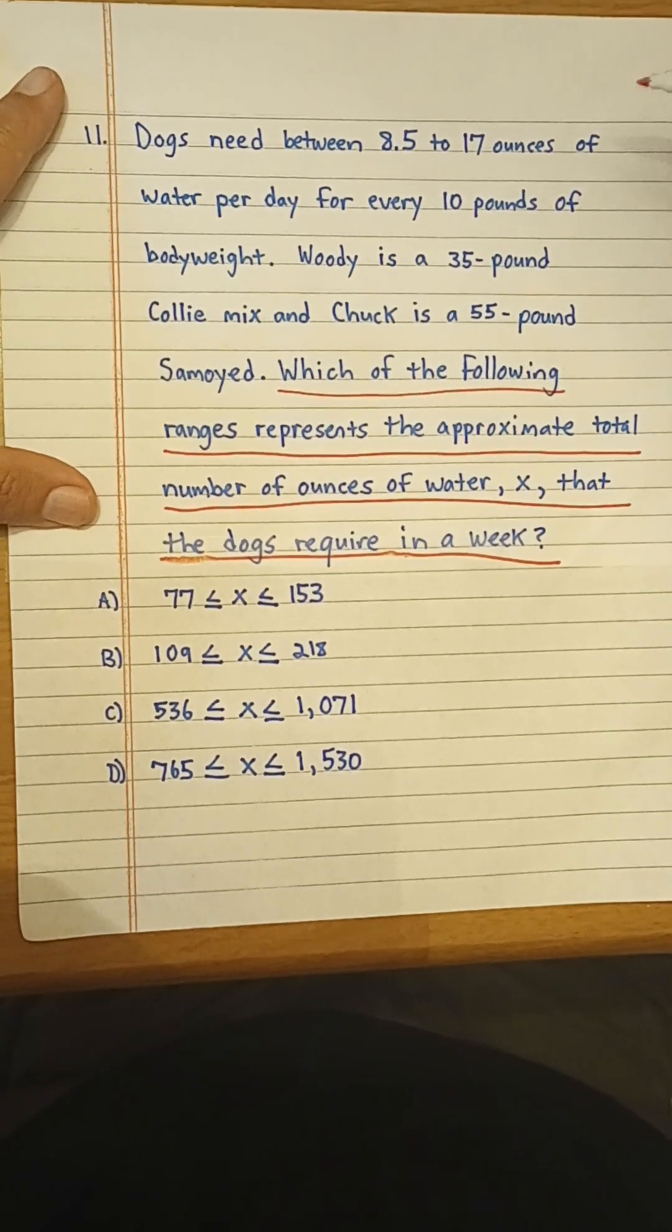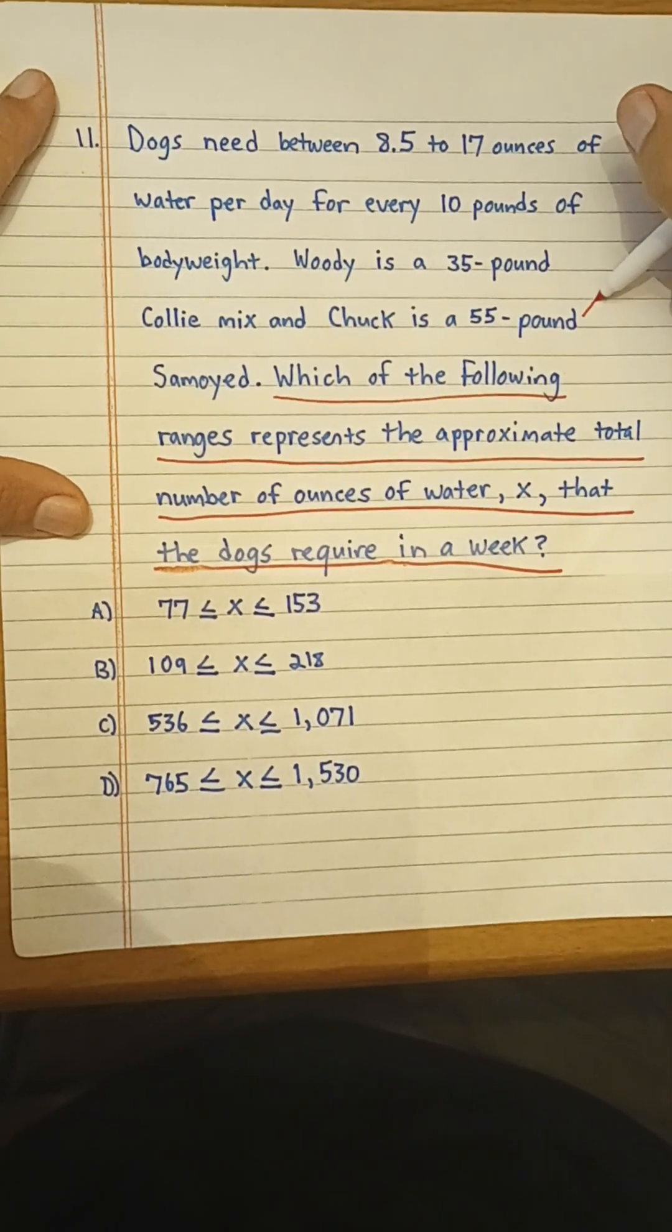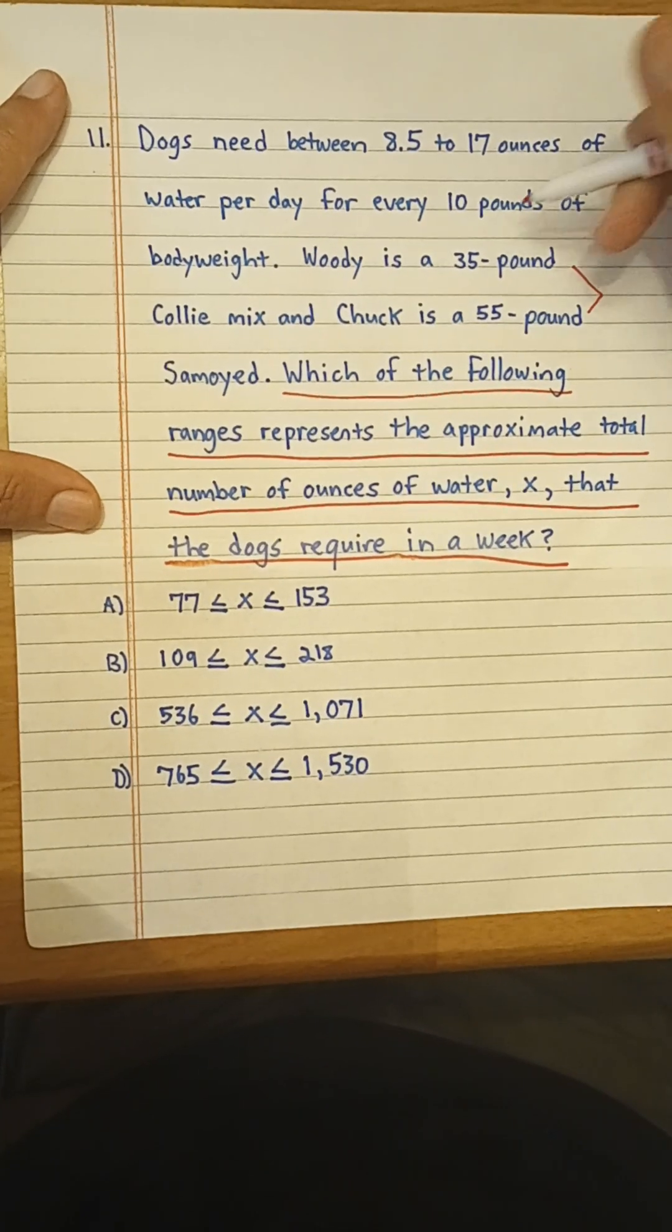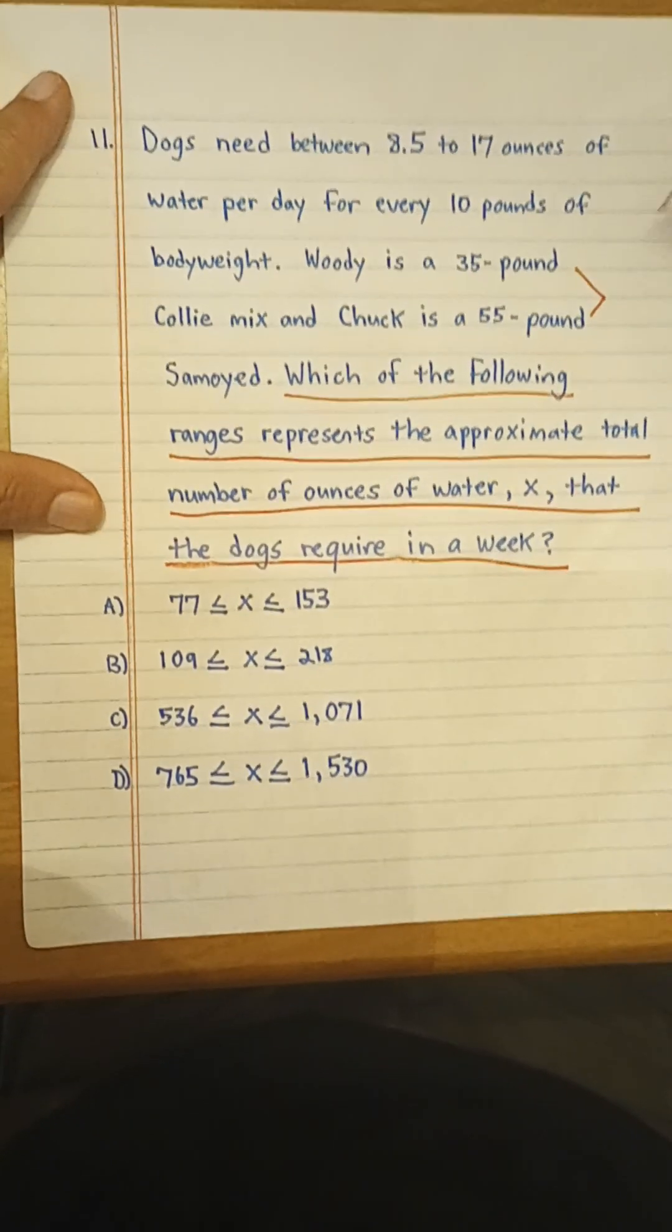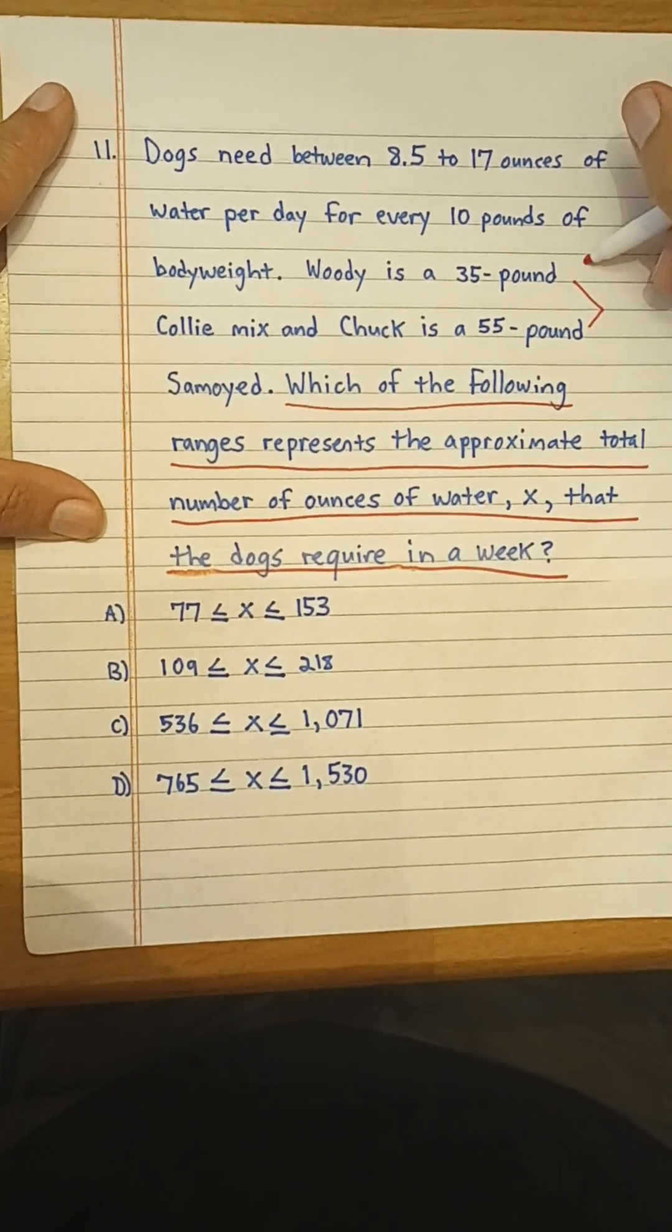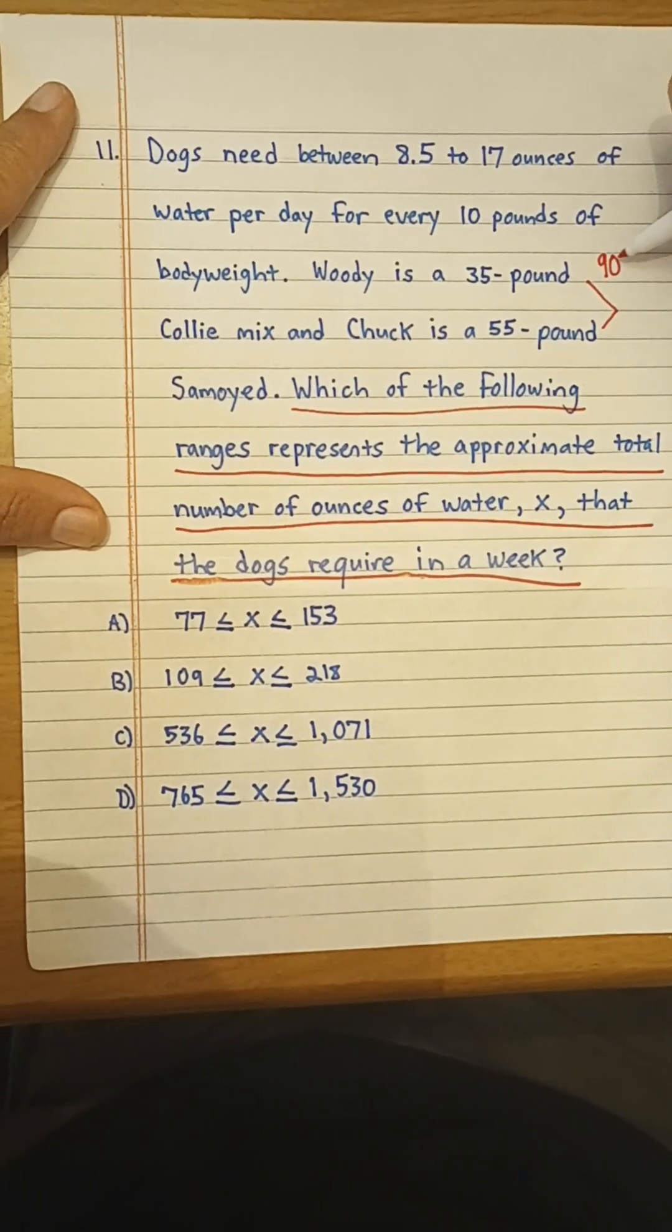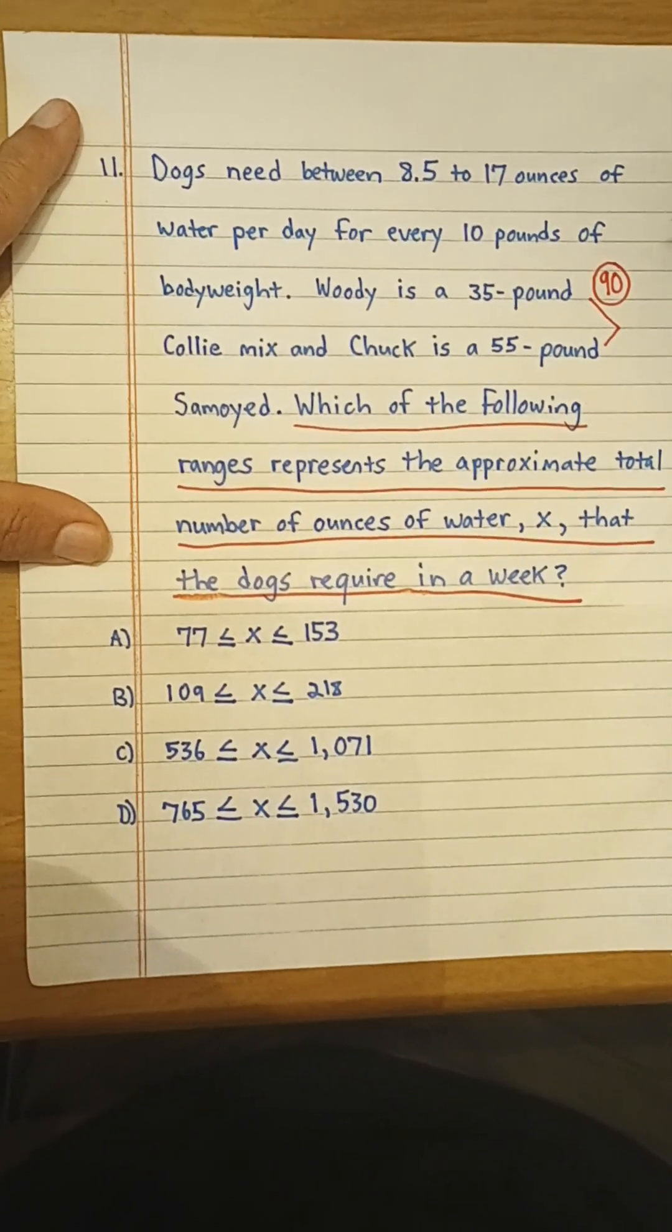Okay, well let's see. We look at the total weight of the two dogs, right? And we have 35 pounds and 55 pounds. So they have a total body weight combined of 90 pounds.